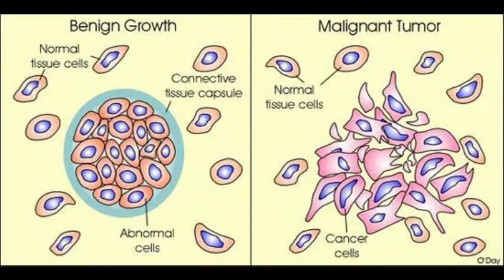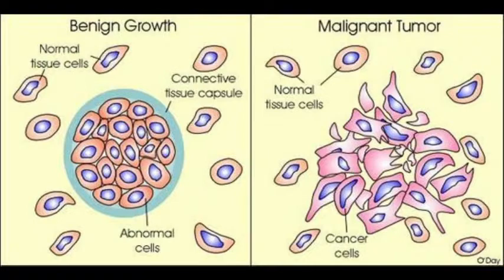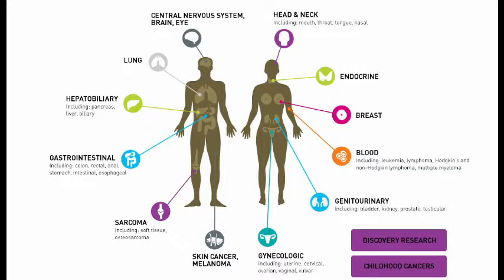Cancer is of two types. In benign tumors, the normal property of contact inhibition is maintained, preventing mitosis if the cell touches another cell. In malignant tumors, contact inhibition is completely lost, allowing cancerous cells to travel throughout the body — a process called metastasis, which is the most feared property of malignant tumors.